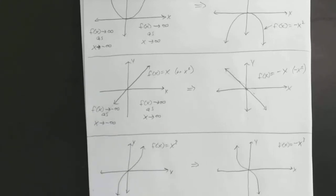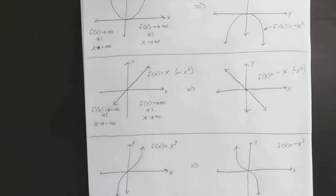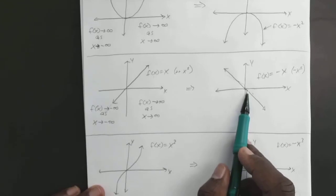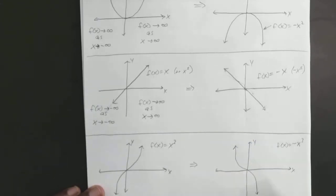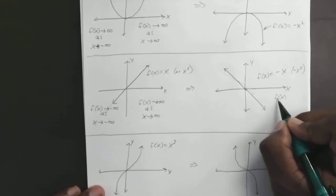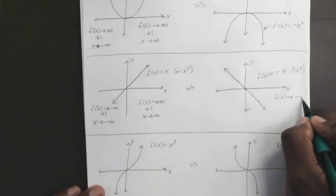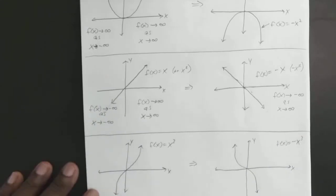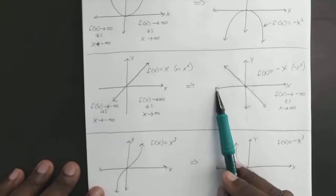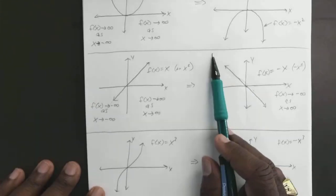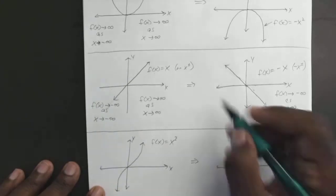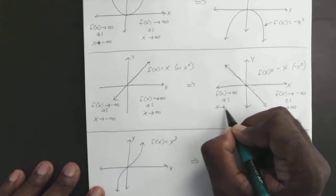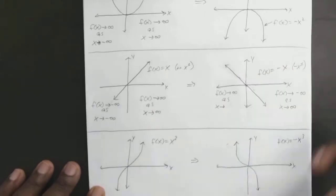Here we see that as X is getting bigger and bigger, Y is getting smaller and smaller, so f(x) goes in the direction of negative infinity as X gets bigger. On the other side, as X gets smaller and smaller, Y is going to keep getting bigger and bigger, so f(x) approaches positive infinity as X goes in the negative infinity direction.